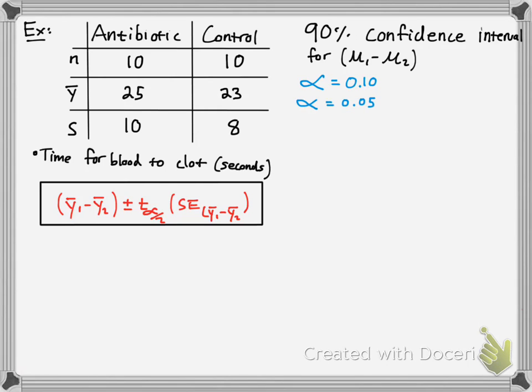So one thing we need to determine is our alpha and alpha over 2. So alpha pretty much means what we're not confident about. So we're dealing with 10% of what we're not confident about, and alpha over 2 is simply half that. So 10 divided by 2 is 5 in decimal form, so 5%. So now we need to determine our t values. So we need to do our t alpha over 2, but we need our degrees of freedom. So we're going to find the degrees of freedom by using this table.